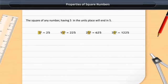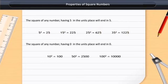The square of any number having 5 in the units place will end in 5. The square of any number having 0 in the units place will end in 0.